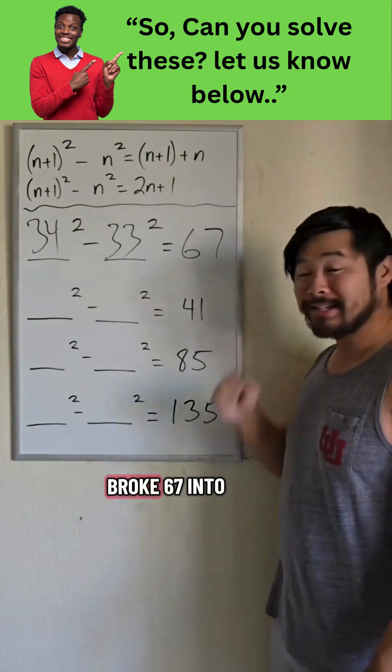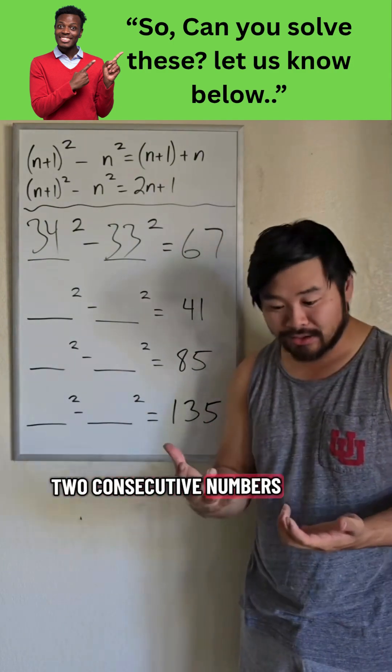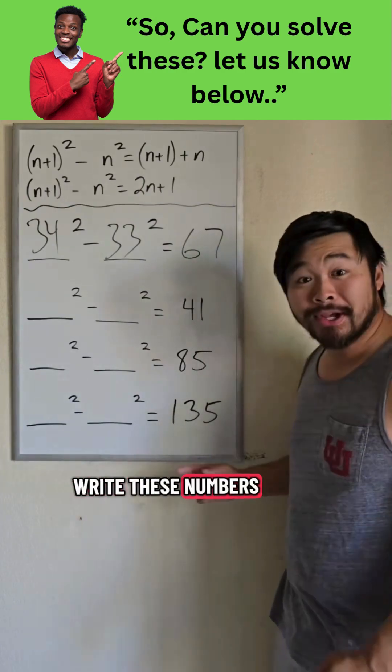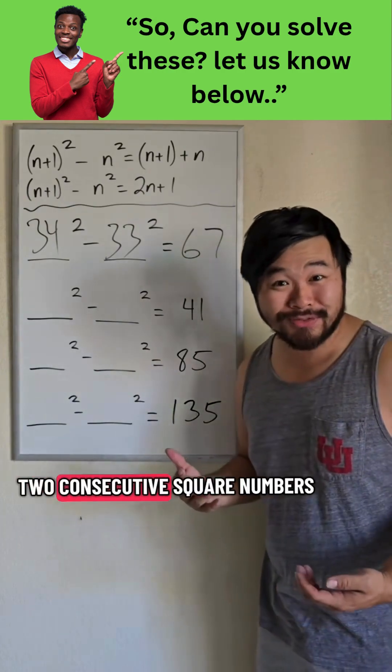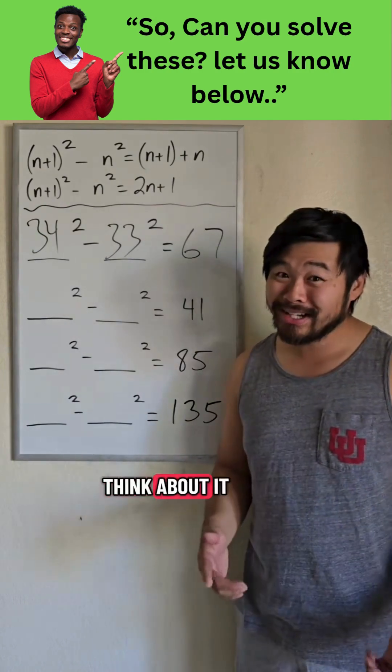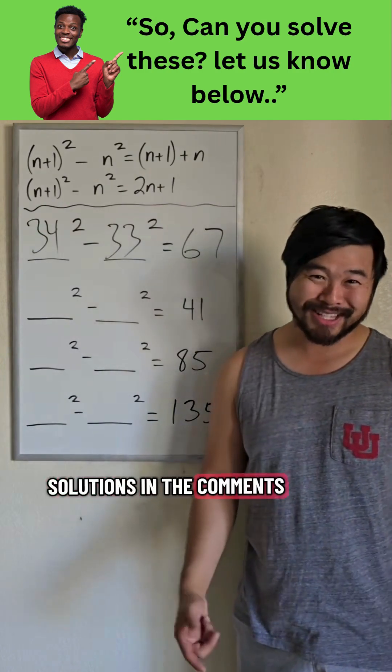Just as we broke 67 into two consecutive numbers, 34 and 33, how can we write these numbers so they are the difference of two consecutive square numbers? Think about it and share your solutions in the comments.